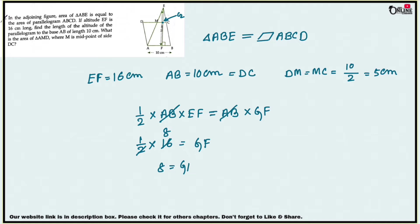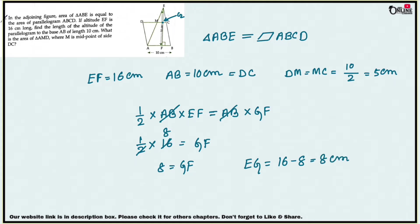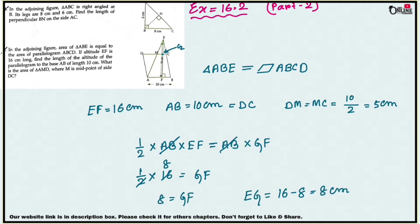So GF equals 8 centimeters. Therefore EG equals 16 minus 8, which also equals 8 centimeters. Now we have to find the area of triangle AMD.